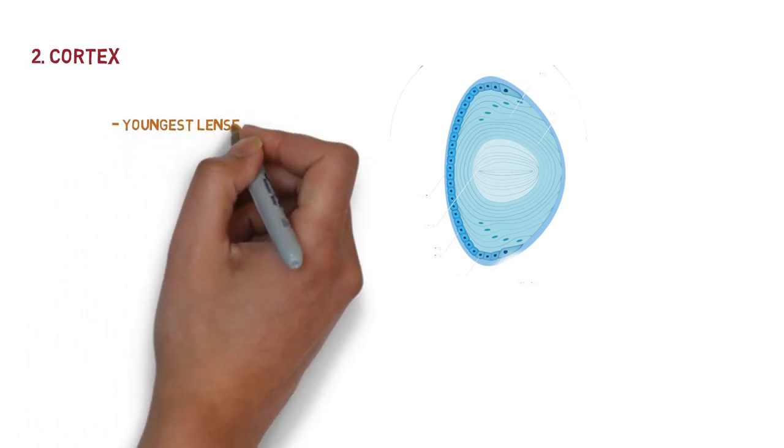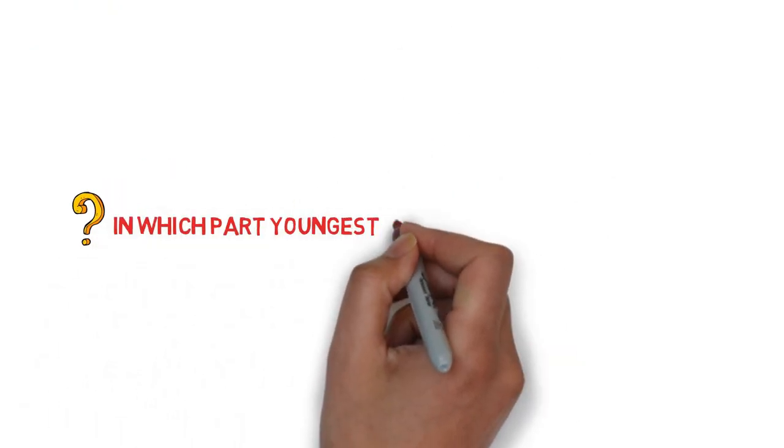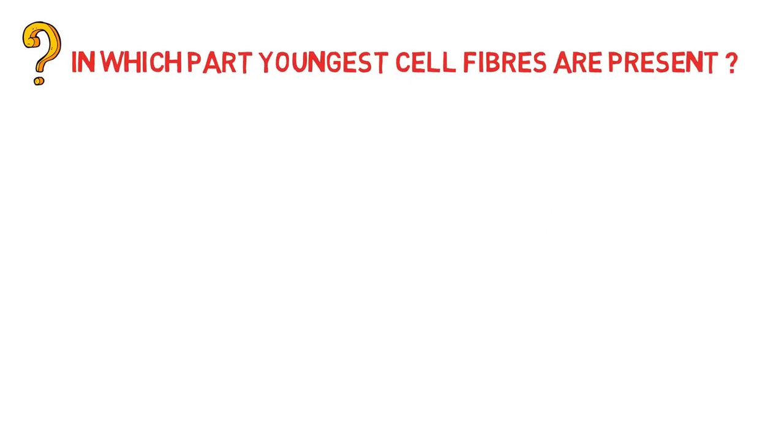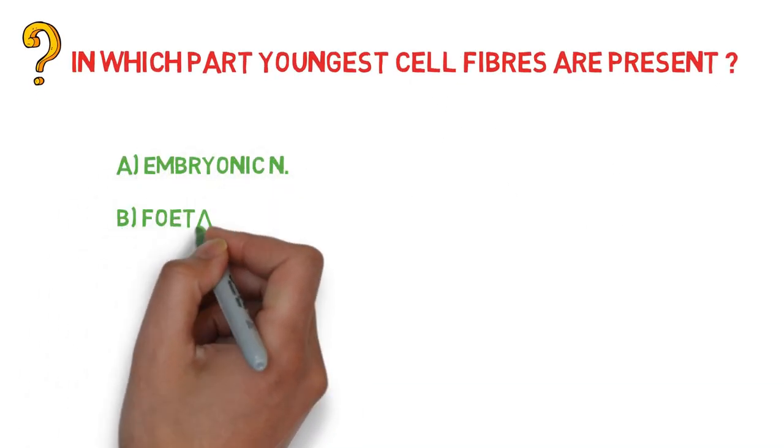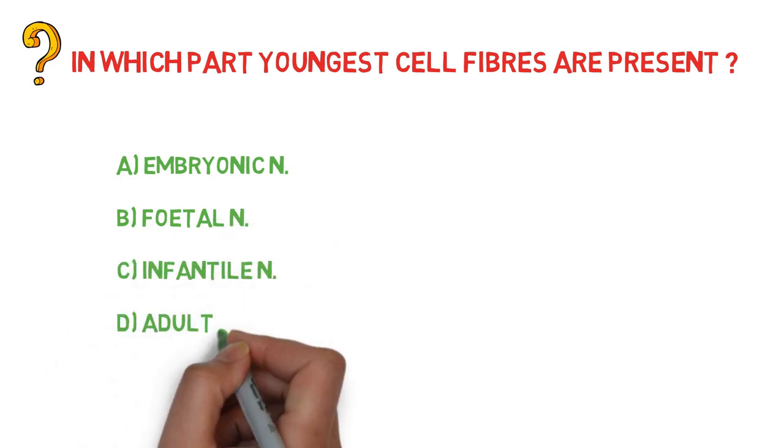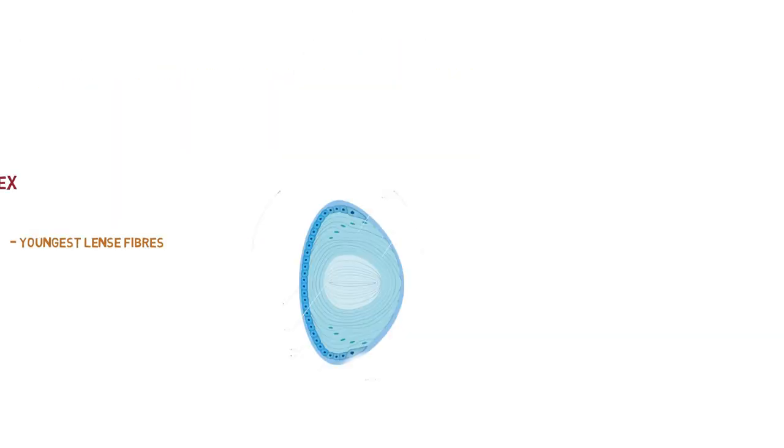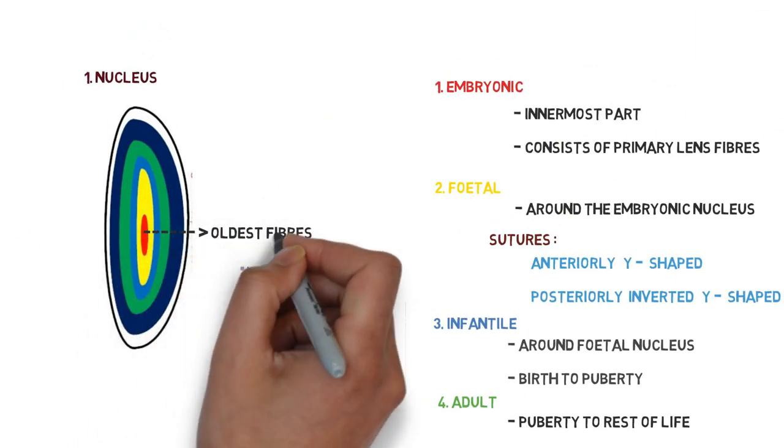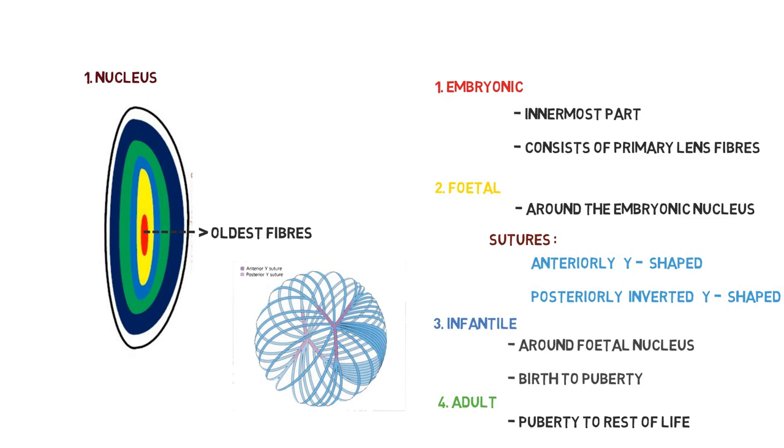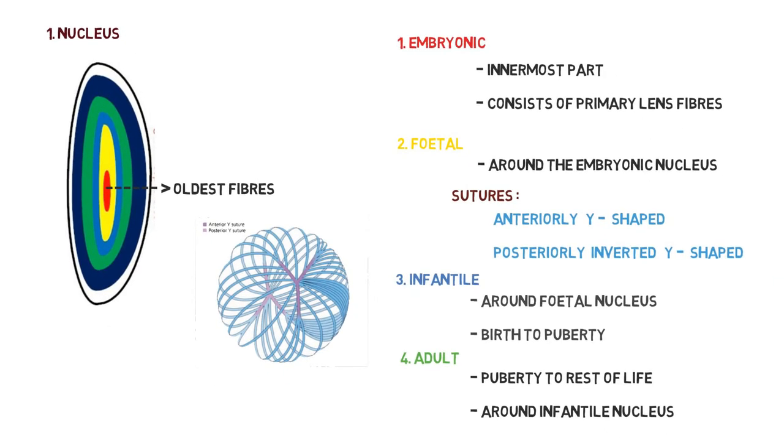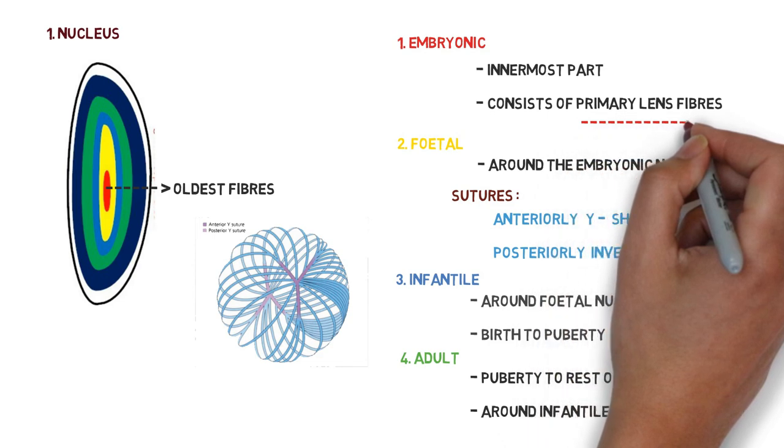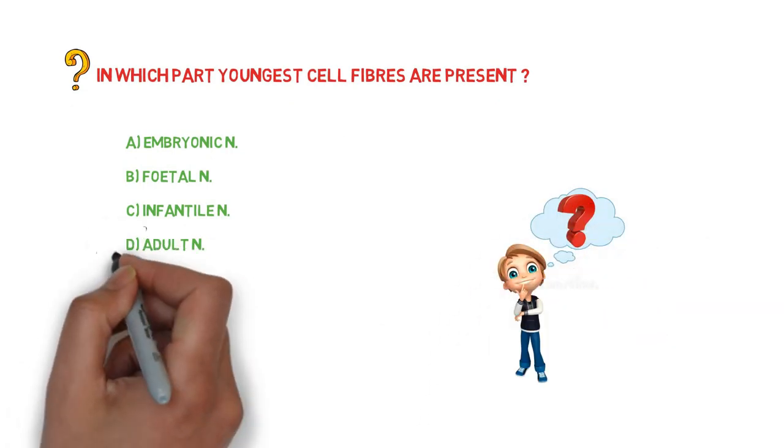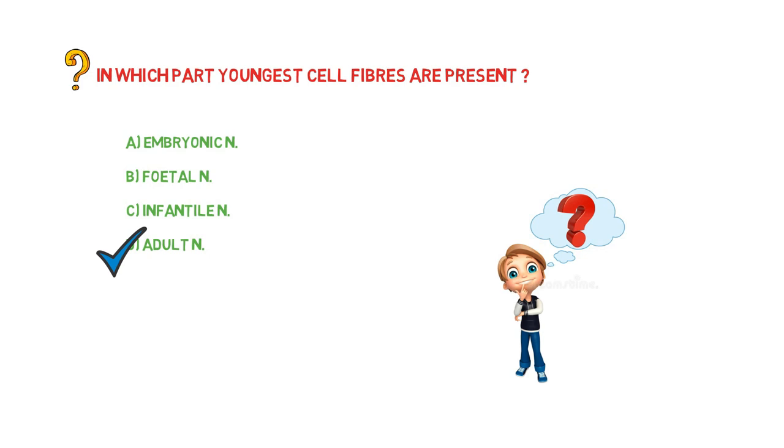And here we have a simple question: In which part are the youngest cell fibers present? The options are embryonic, fetal, infantile, or adult nucleus. What is your guess? Yes, at the center part there are the oldest fibers present—that is, in embryonic period there are the primary lens fibers present in central part. So the youngest fibers are present at which part? Yes, absolutely right—it is present in the adult part, and suppose if you have the option of cortex, you must write cortex.